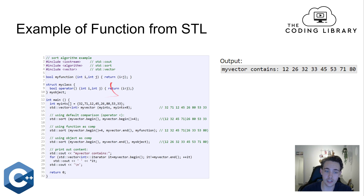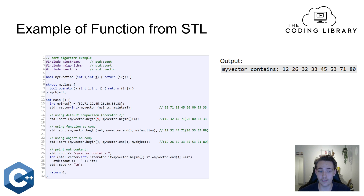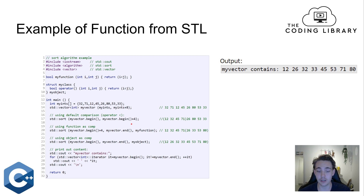An example from the standard template library is the sort function, where we can sort a vector or other containers and define the way it should sort. We have an unsorted vector and we call the sort function — which is built into the STL — passing my_vector.begin() which returns an iterator to the start of the vector. These iterator functions are also built-in methods on the vector container from the standard template library.